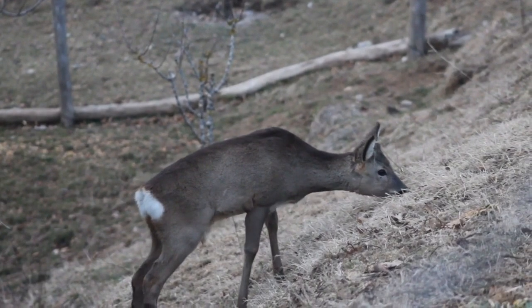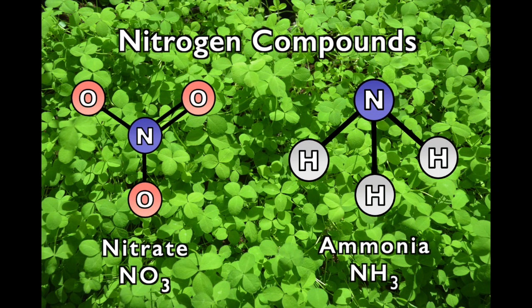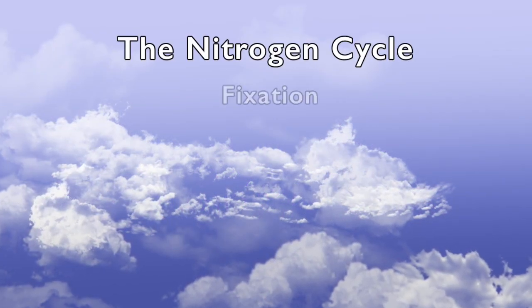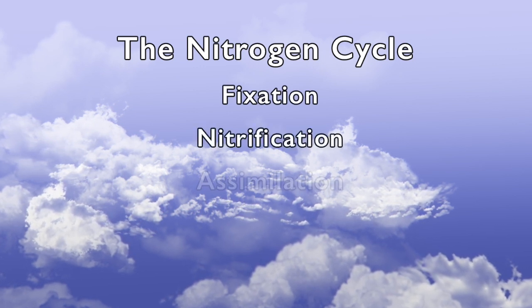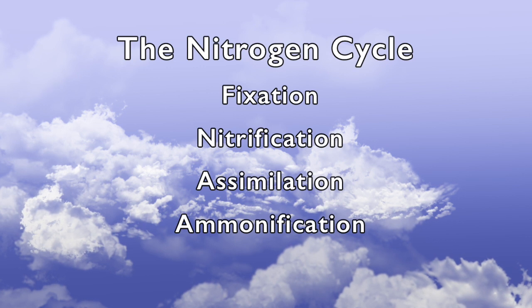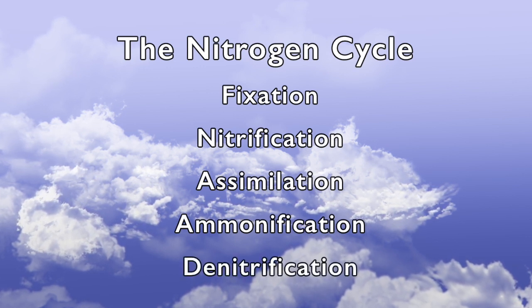It has to first be fixed into nitrogen compounds, nitrates, and ammonia. There are five steps in the nitrogen cycle: fixation, nitrification, assimilation, ammonification, and denitrification.